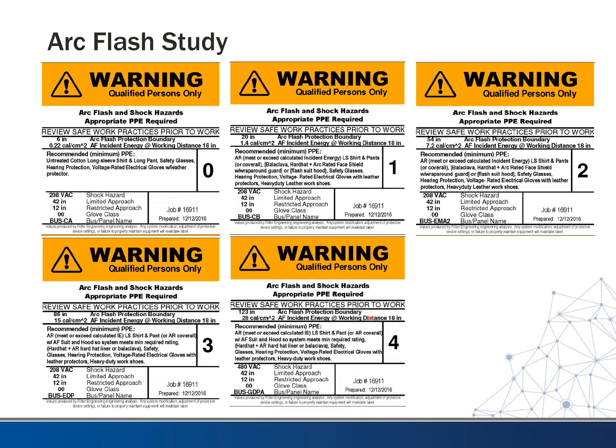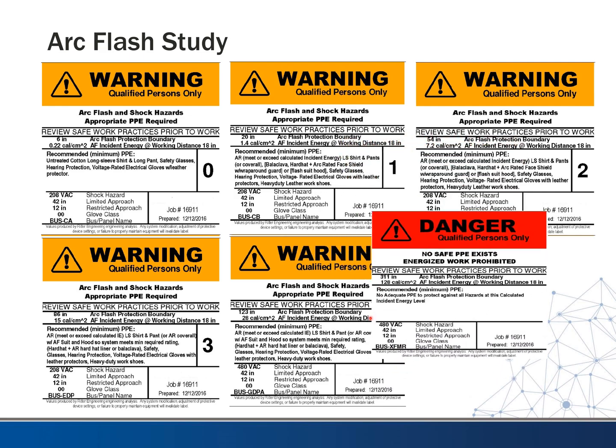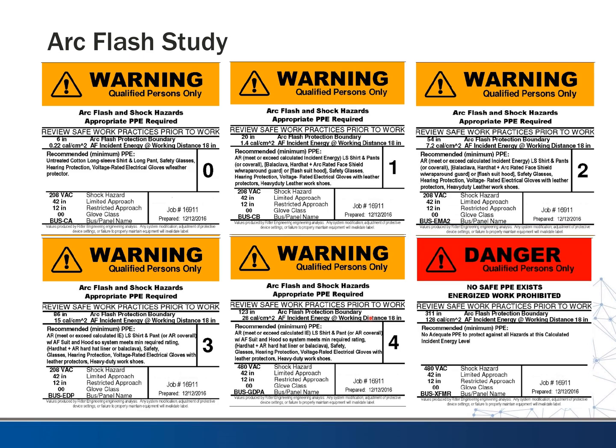Category four is the highest category where you can still find PPE to make it safe enough to work. And finally, if you come across one where there is no safe PPE — which is usually over about 40 calories per centimeter squared — we just say 'dangerous,' there's no safe PPE that exists and energized work is prohibited. You're likely to see these arc flash labels on panels — they're required to give information to keep technicians safe as they work on different pieces of equipment.